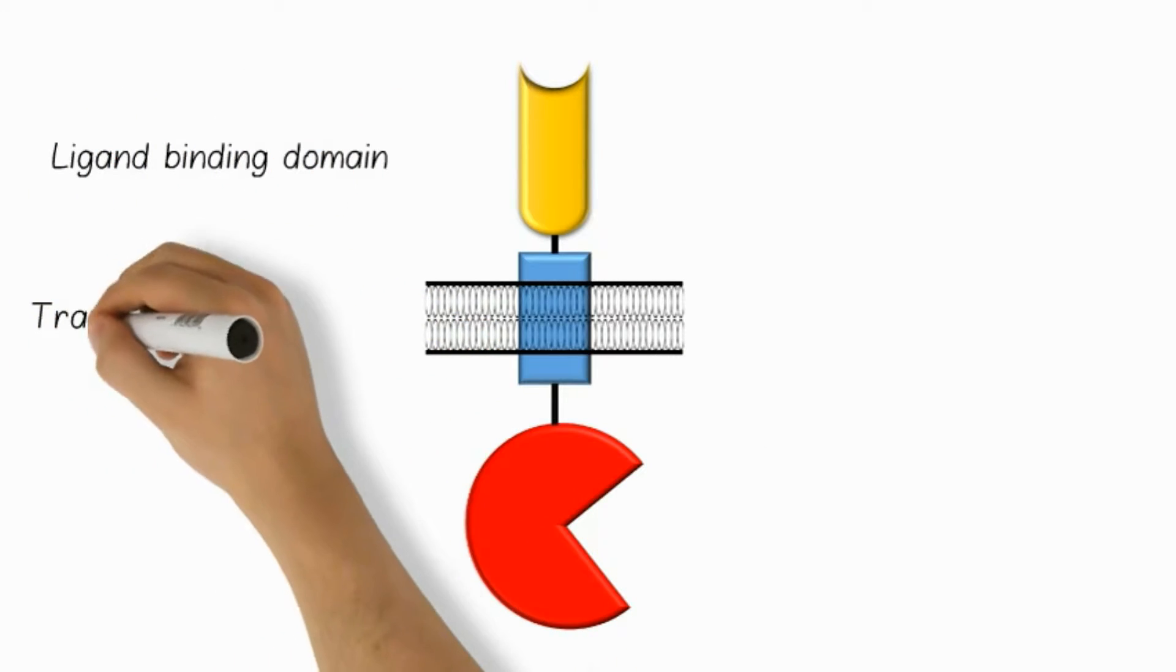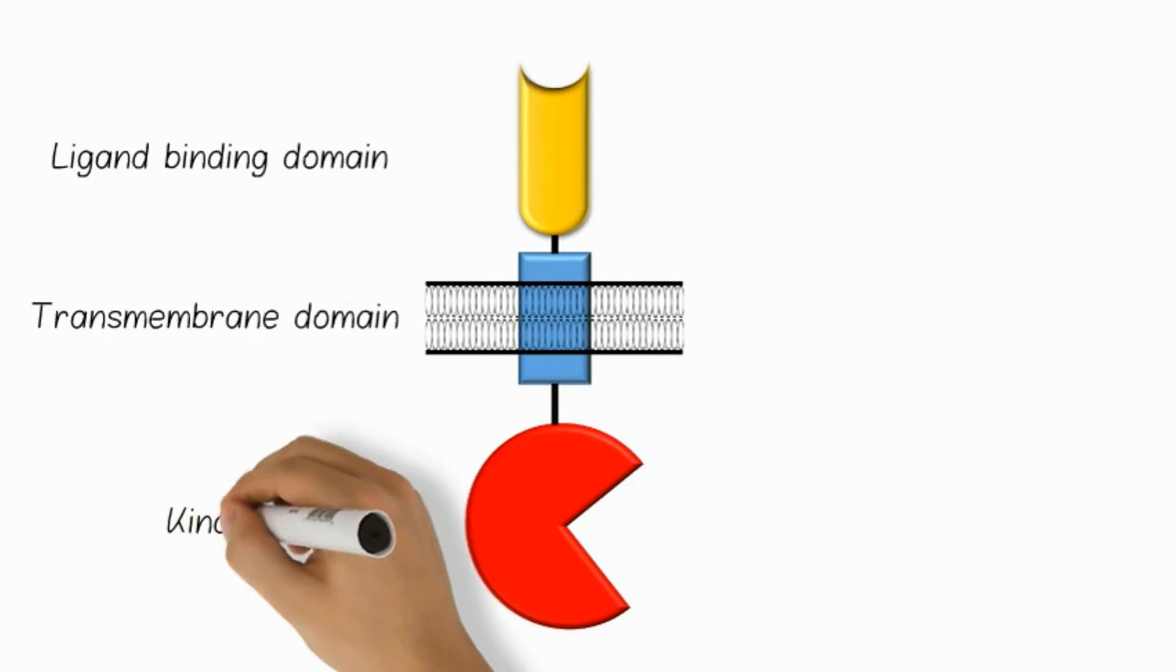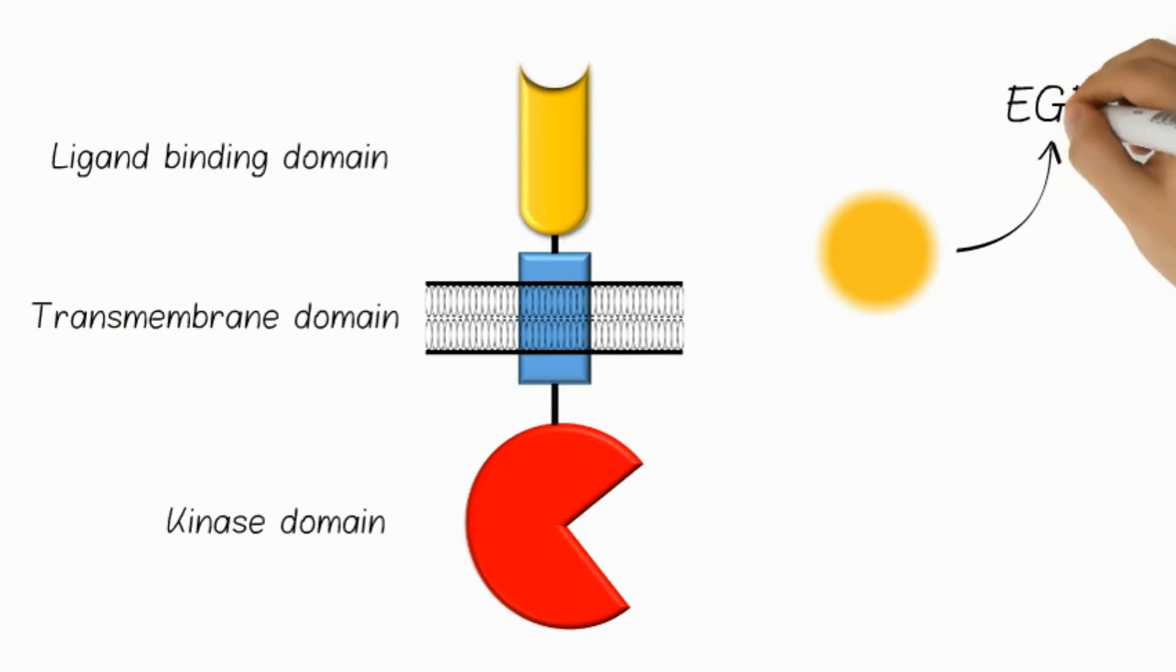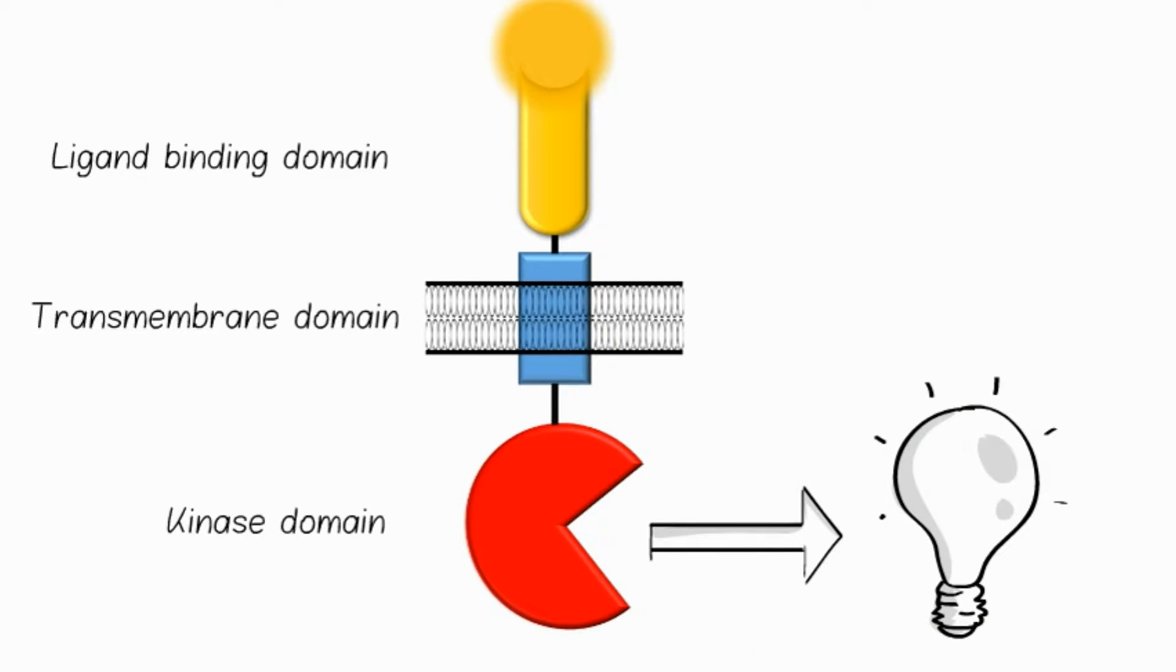The EGFR receptor consists of three parts: the ligand binding domain, the transmembrane domain, and the kinase domain. Once the ligand EGF binds the receptor, the kinase domain is activated and downstream signaling is initiated.